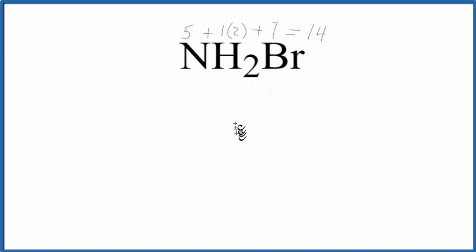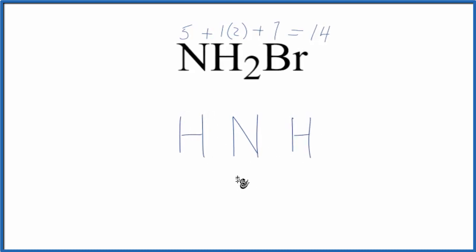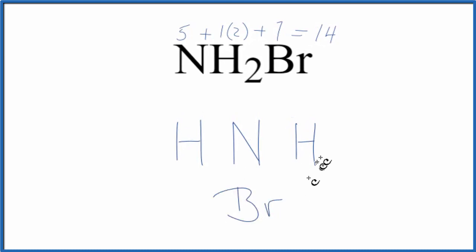Nitrogen is less electronegative than bromine, so we'll put nitrogen in the center. Hydrogens always go on the outside. We'll put our bromine atom down here, so we have the basic structure.